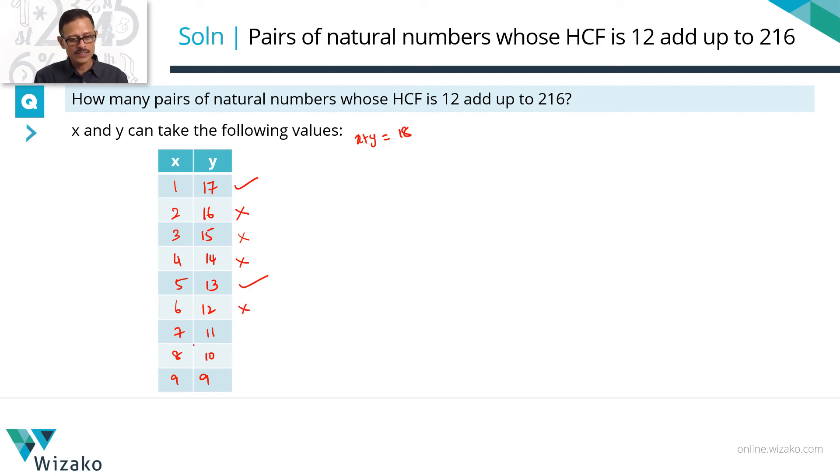6 and 12, HCF is 6, won't work. 7 and 11, both are prime incidentally, therefore their HCF will be 1. 8 and 10, HCF is 2, will not work. 9 and 9, HCF is 9, will not work.